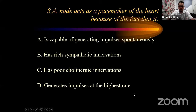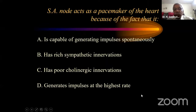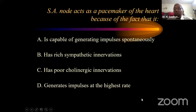Most participants answered D. Though A is also partially correct, D is the most appropriate answer. When we say pacemaker, the predominating pacemaking site is the one which generates the highest rate — hence the SA node takes over. Other areas such as the AV node and ventricle can also generate impulses spontaneously, but the SA node generates the highest rate, making it the primary pacemaker.